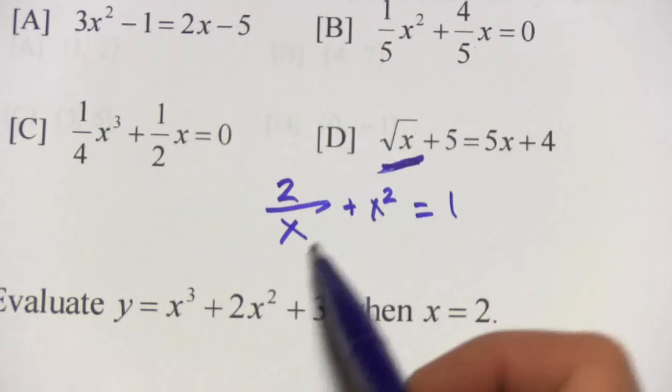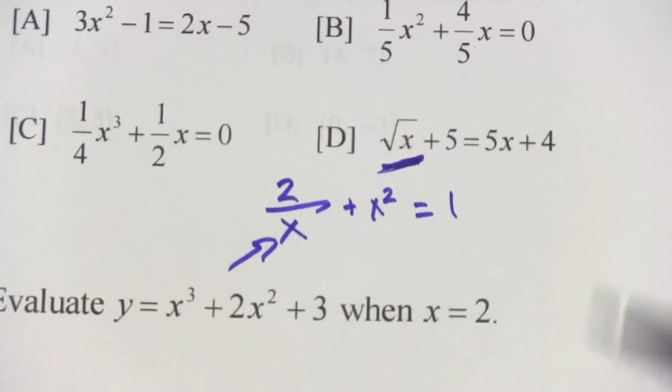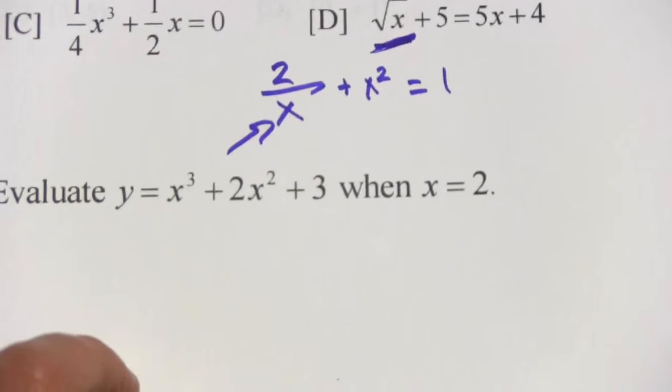So look for the square root and look for the x in the denominator as signs that you've got something other than a polynomial equation. All right, let's look at one more.